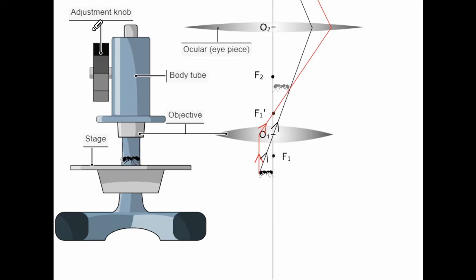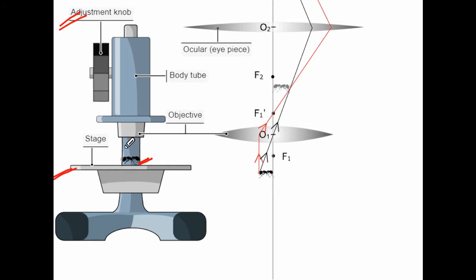There is an adjustment knob here. When you rotate this knob, you can focus the object. This is the stage — the whole platform where the object is placed. This ant represents the object placed on the stage, and this part is called the tube.